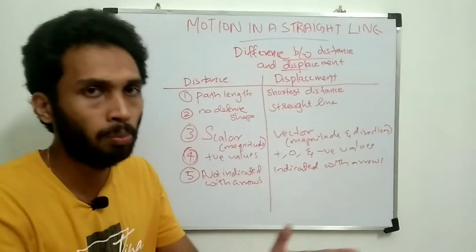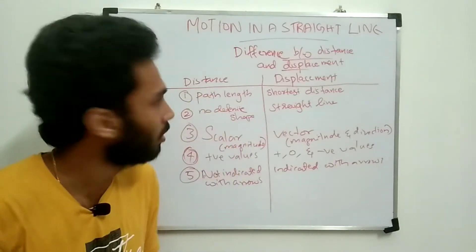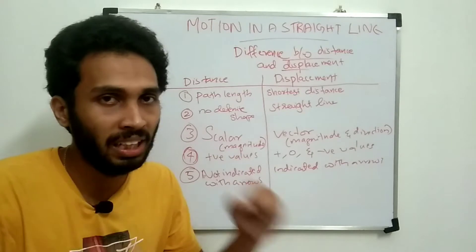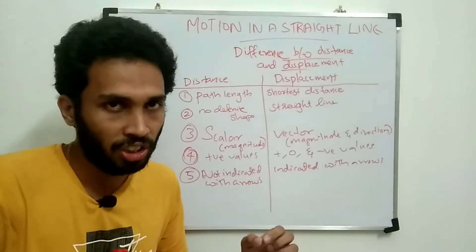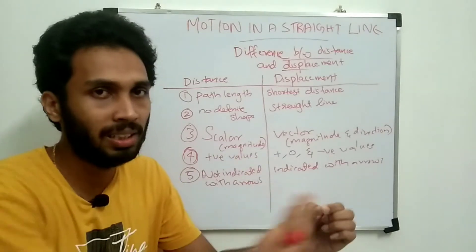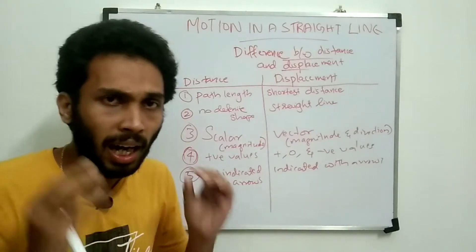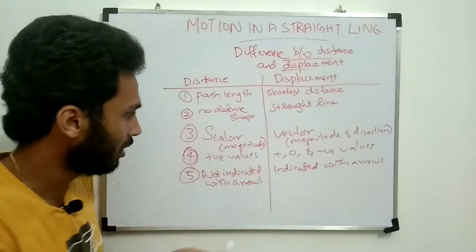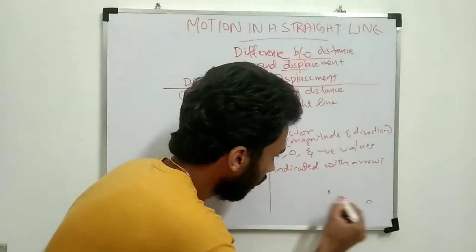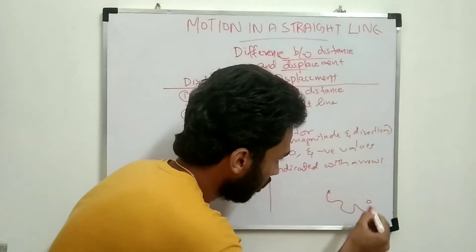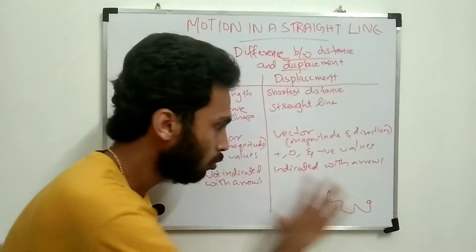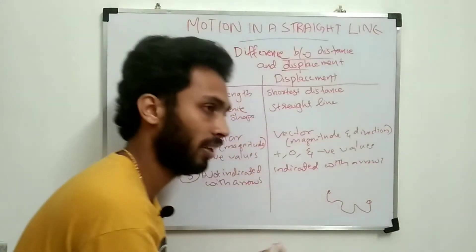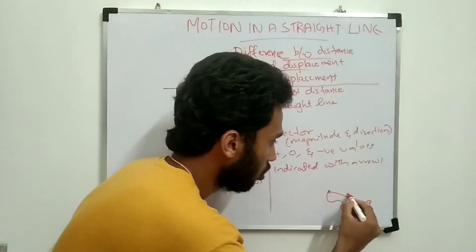Displacement is the shortest distance between the initial and final points. That is, it is the straight line between the initial point and the final point.